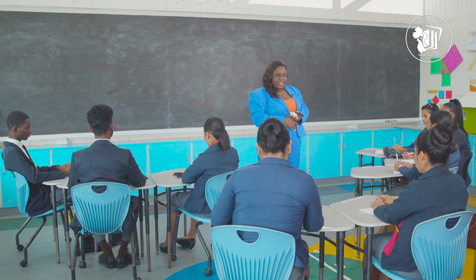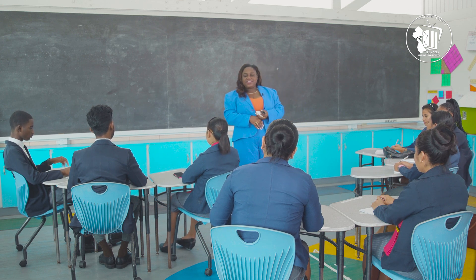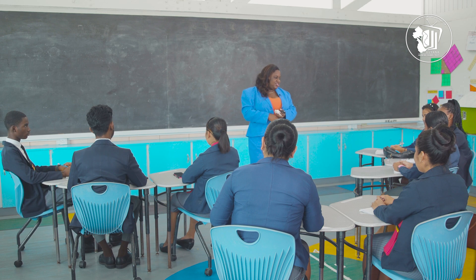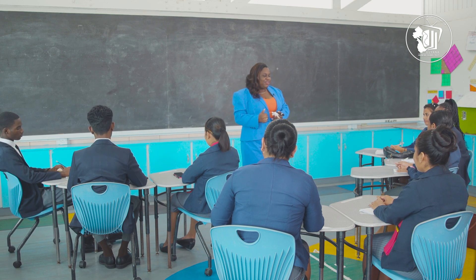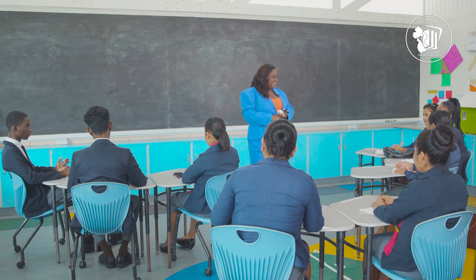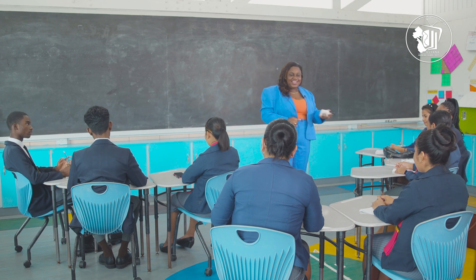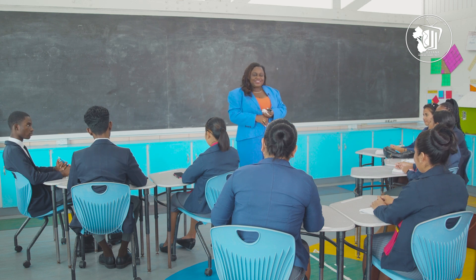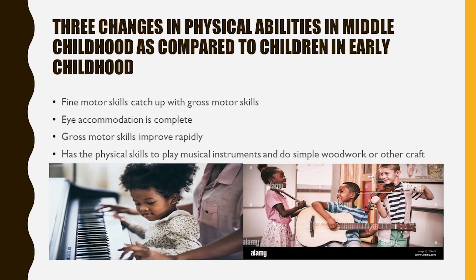Recommended activities for children at this stage include jumping, kicking a ball towards a goal, and balancing. By the end of middle childhood, fine motor skills catch up with gross motor skills, so children will not only write smaller and neater but will do so in a timely manner. High accommodation is also complete.